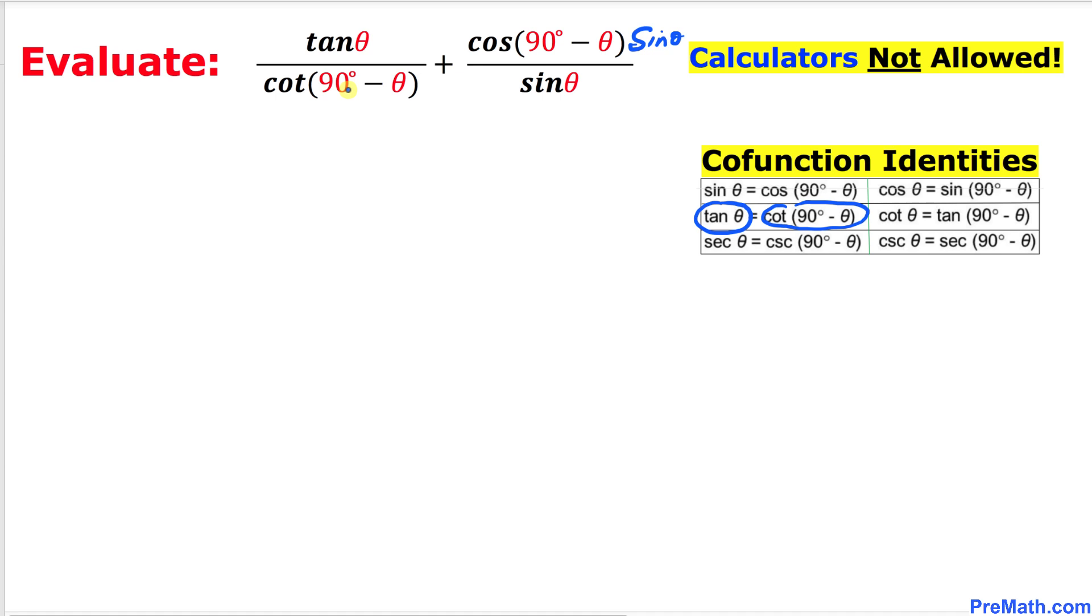So therefore, our rational expressions could be written as tangent of θ divided by tangent of θ, and then plus, sine of θ divided by sine of θ. I have replaced cotangent with tangent of θ and cosine with sine of θ.